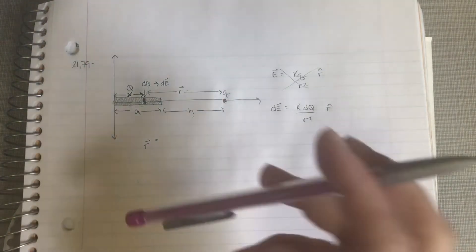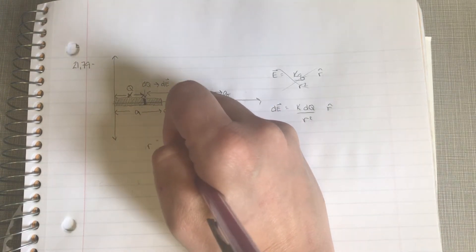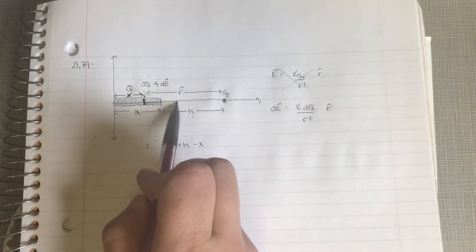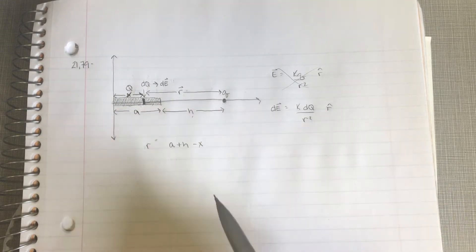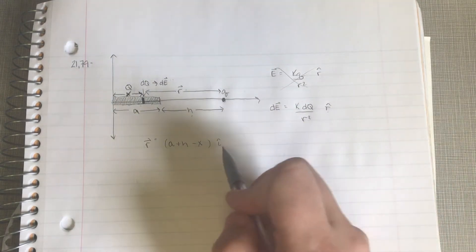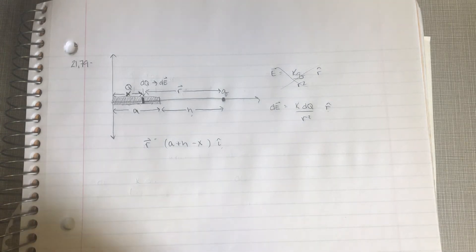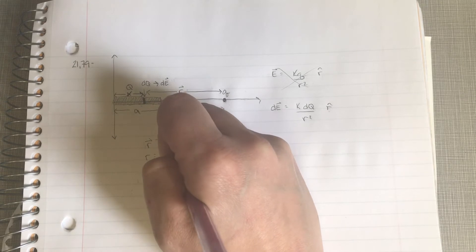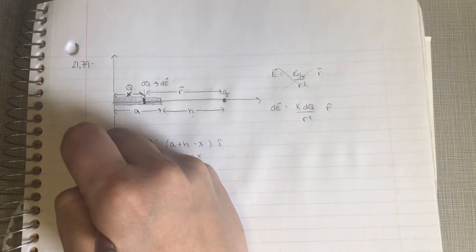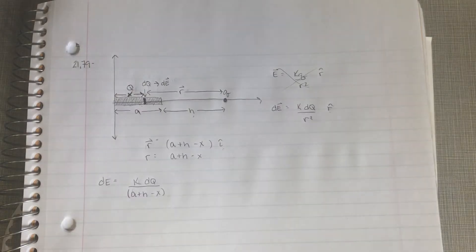We can write r as a plus h minus x — the whole distance over to our point, minus x, the location of our slice. Since we're along the x-axis, the r vector is in the i-hat direction, so r-hat equals i-hat. We don't have to worry about vectors here because it's all in one dimension. So the electric field from our little slice is k times dq over (a plus h minus x) squared.